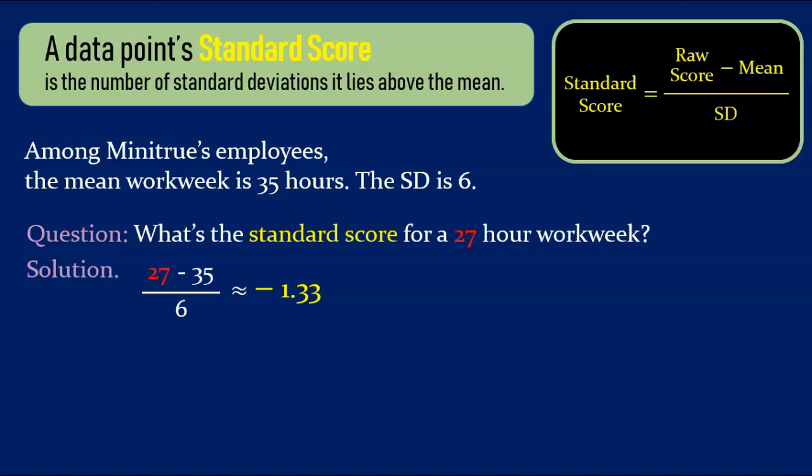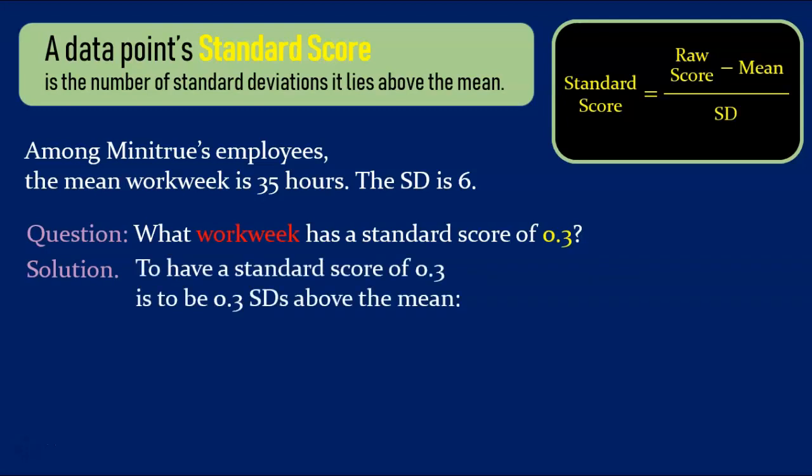Now let's turn this sort of question on its head. What workweek has a standard score of 0.3? To have a standard score of 0.3 is to be 0.3 standard deviations above the mean. So, we start at the mean, which is 35 hours, and add on 0.3 of a standard deviation, which is 6 hours. This brings us to our answer, 36.8 hours.